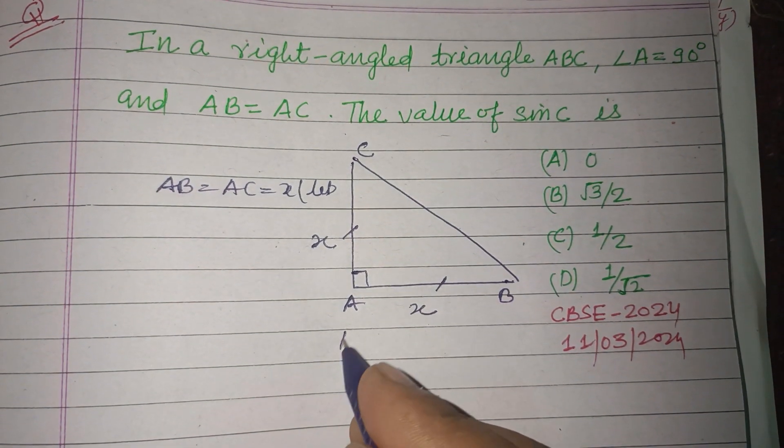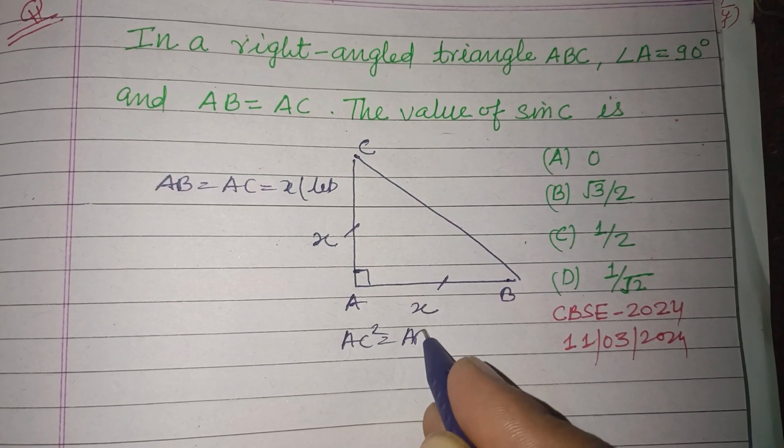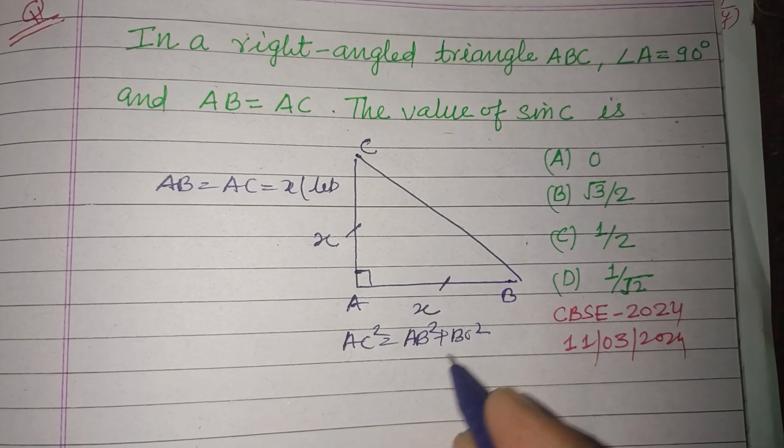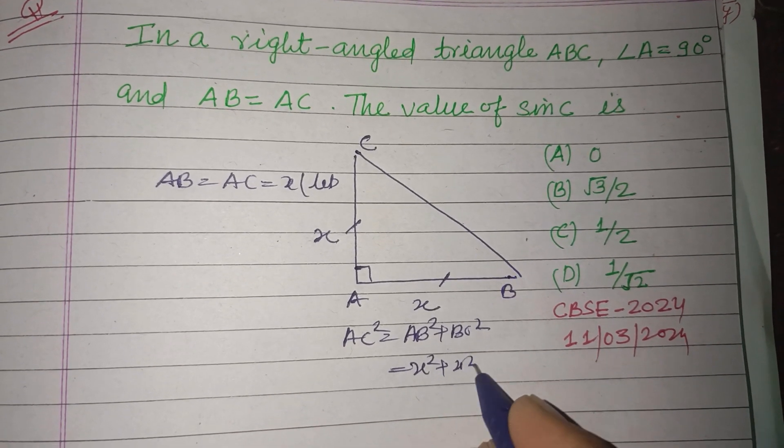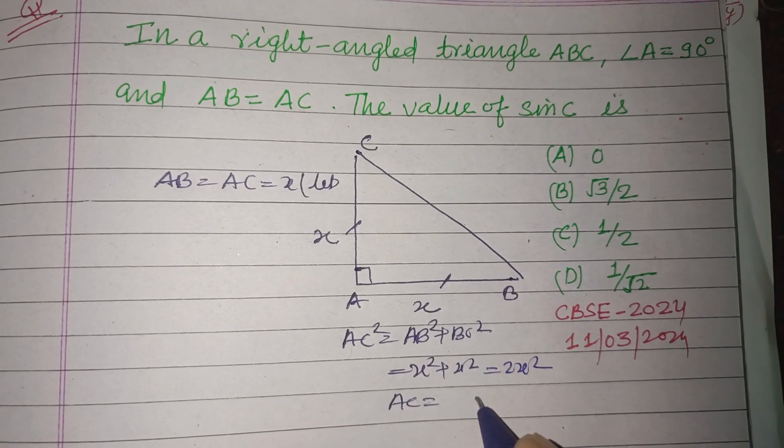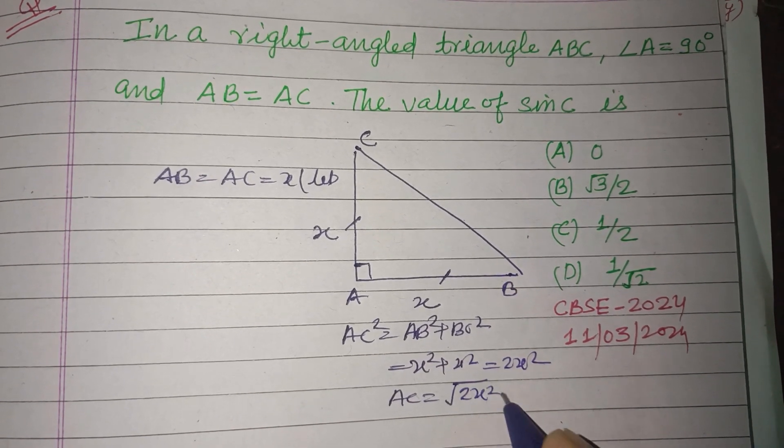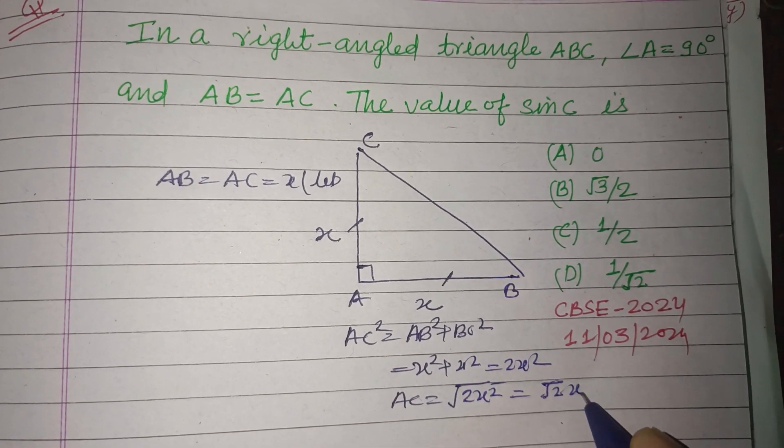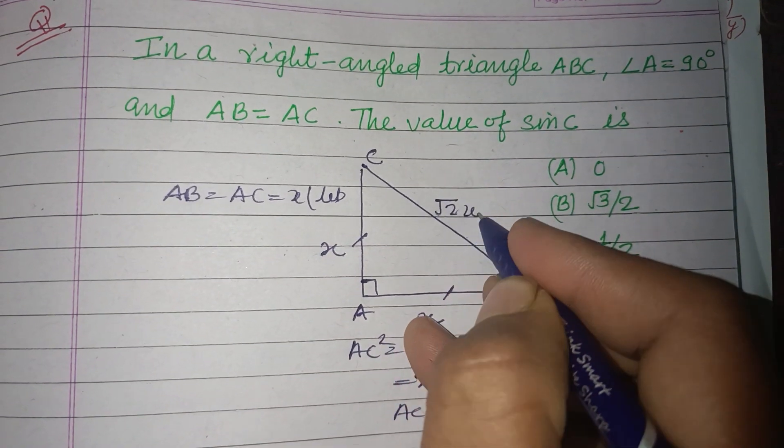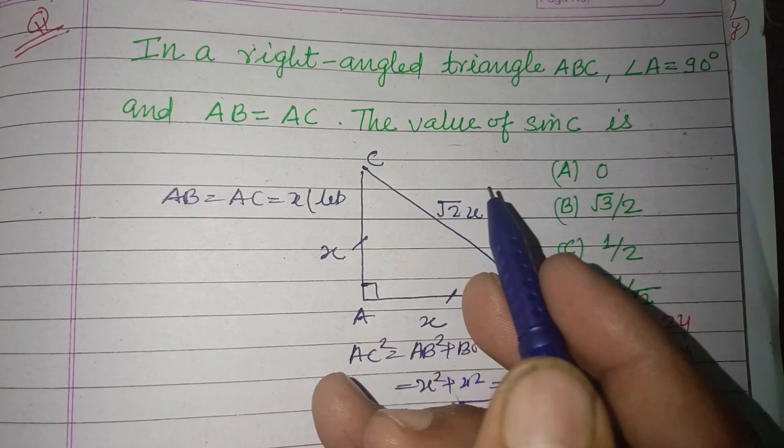So we can easily find BC² = AB² + AC² = x² + x² = 2x². Therefore BC = √(2x²) = √2·x. Now the value of sine C.